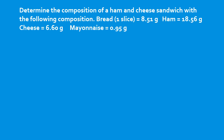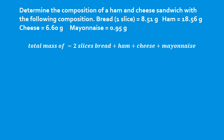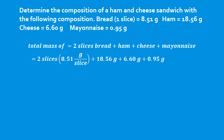In this example, we're asked to determine the composition of a ham and cheese sandwich. We're given the mass of one slice of bread, the mass of ham, the mass of cheese, and the mass of mayonnaise. The first thing we need is the total mass of the sandwich. We have two slices of bread, the ham, the cheese, and the mayonnaise. Each slice of bread is 8.51 grams, so we multiply by two. Add 18.56 grams for ham, 6.60 grams for cheese, and 0.95 grams for mayonnaise — giving a total of 43.13 grams.